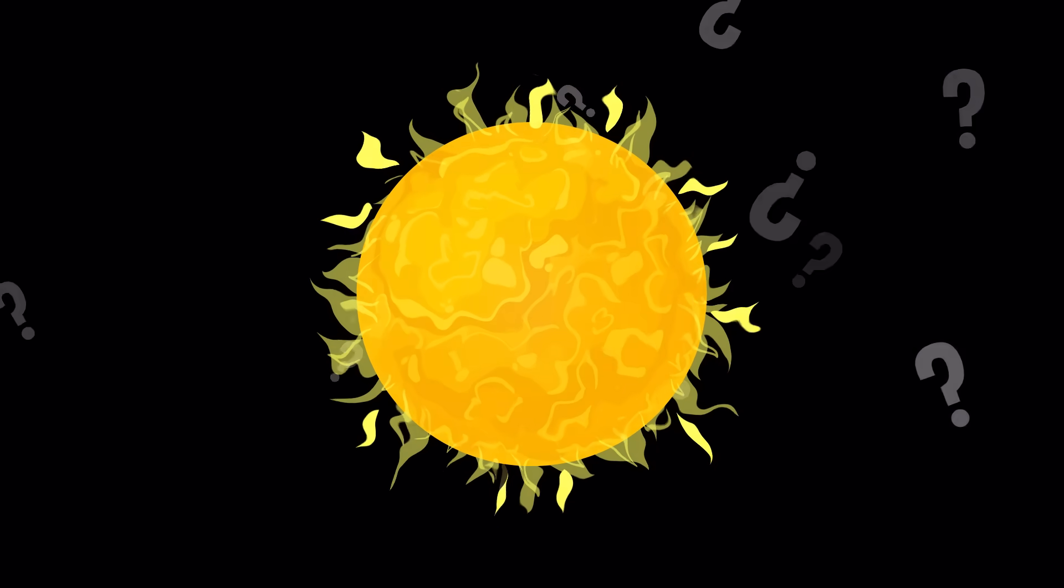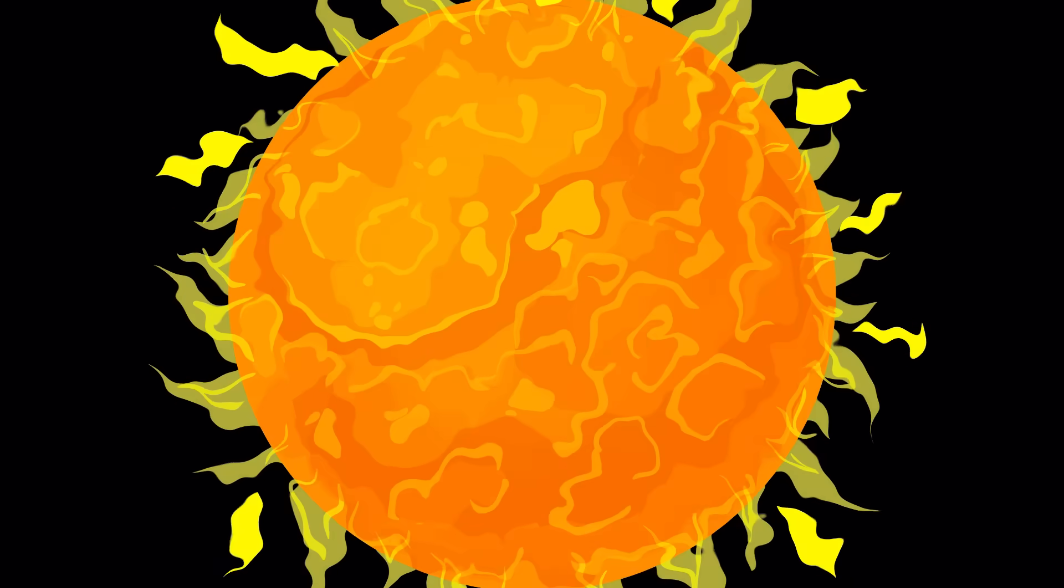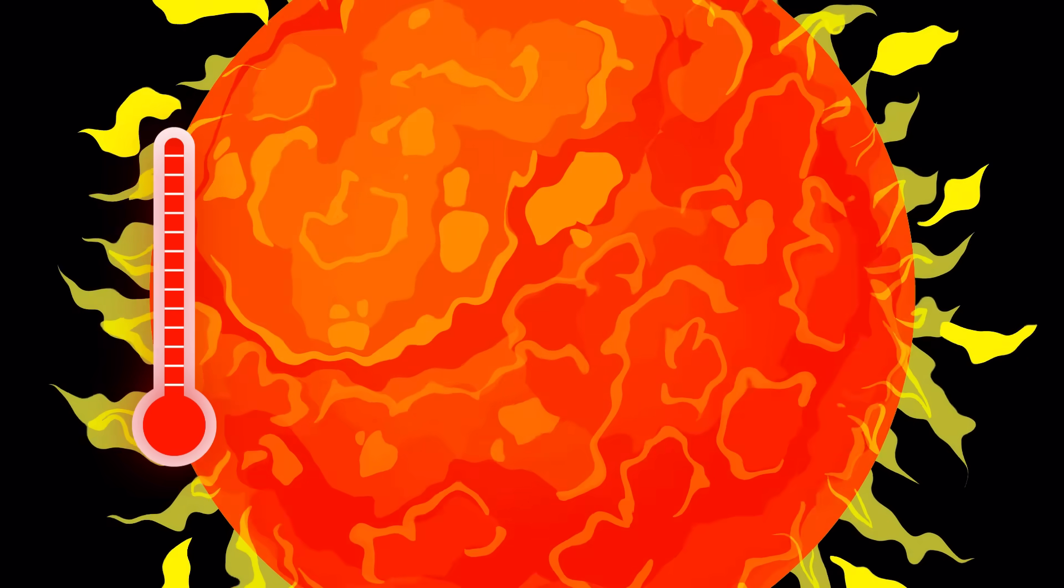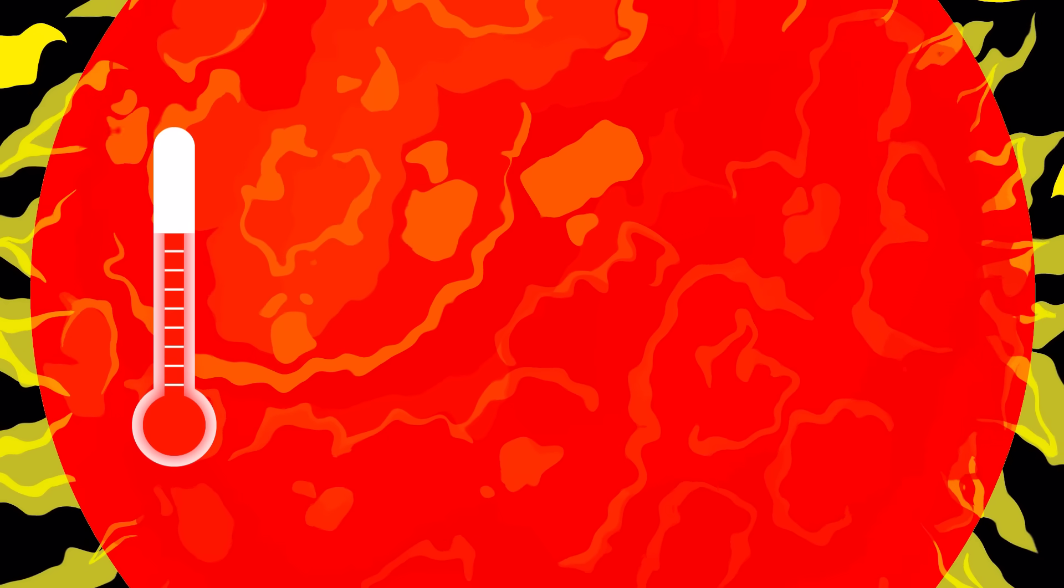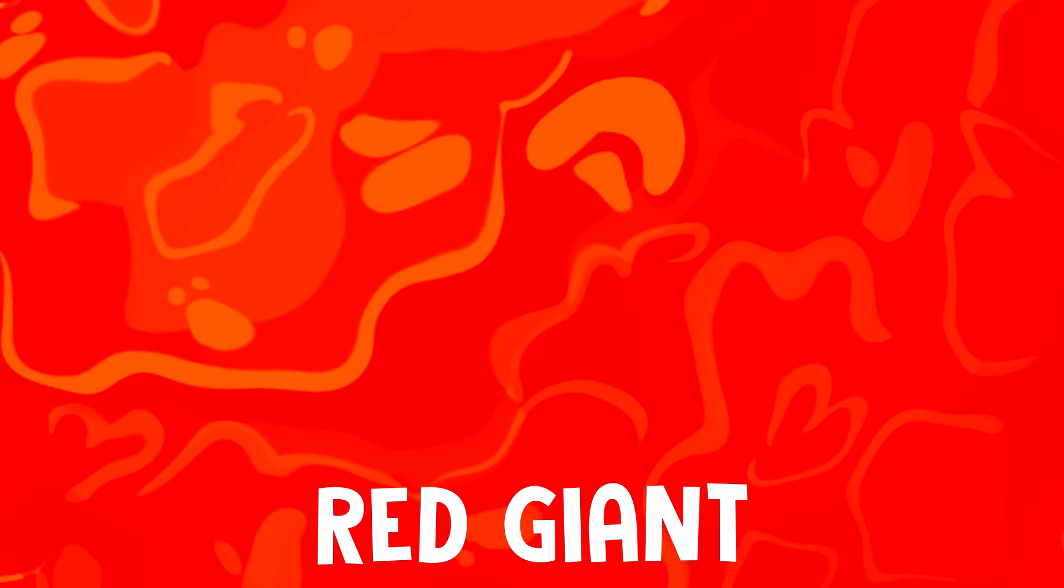So how will our sun die? Well, instead of simply exploding, our sun will actually start to get much bigger, turn red, and become slightly colder, but still scorching as it dies off. Astronomers call this kind of star a red giant. And they mean it when they say giant.